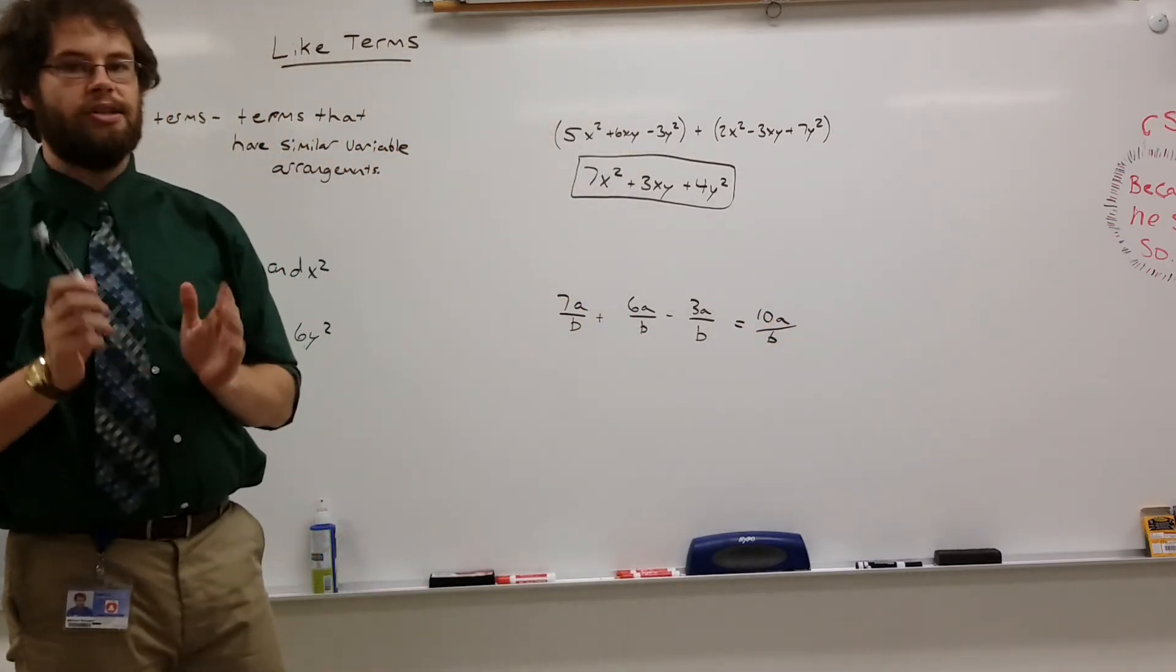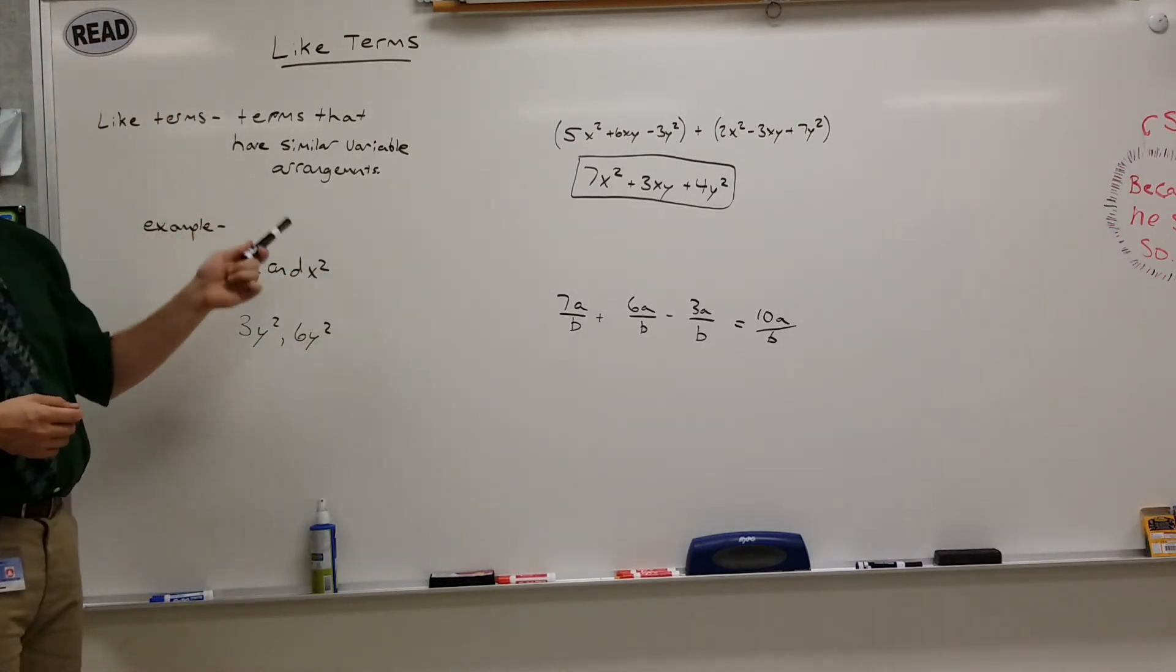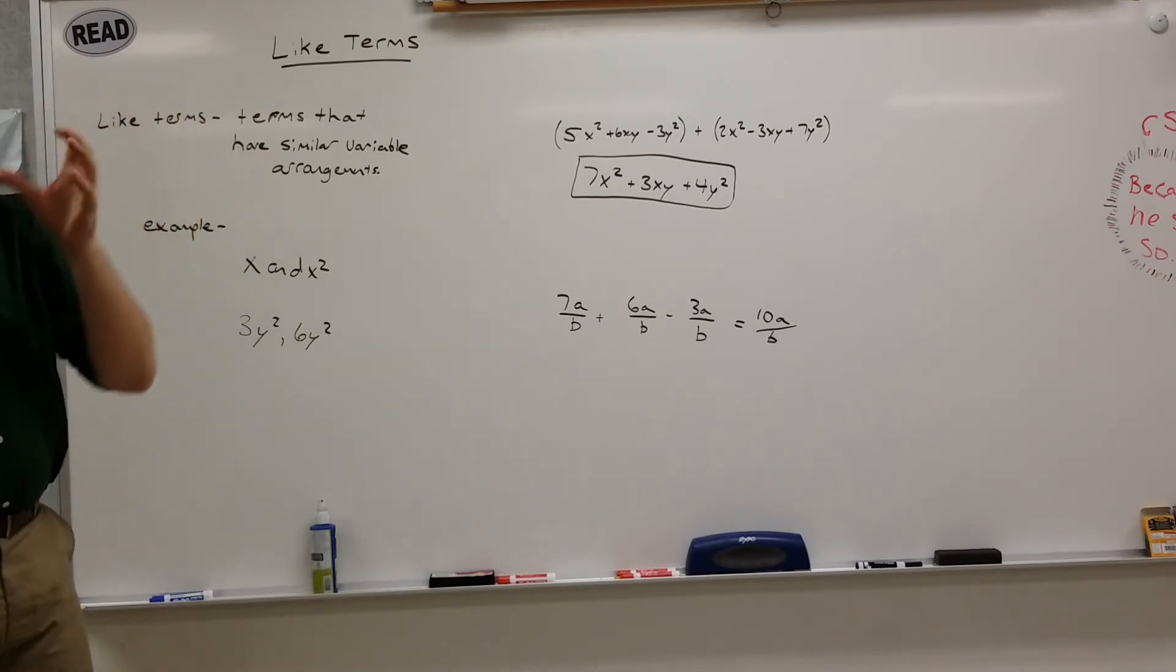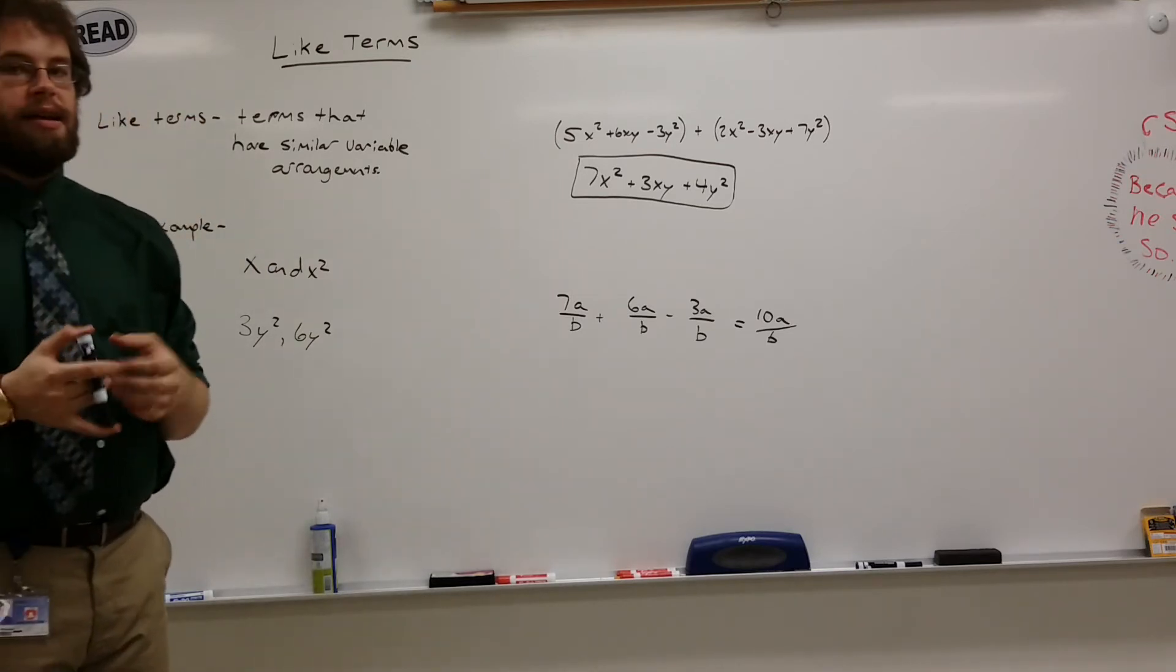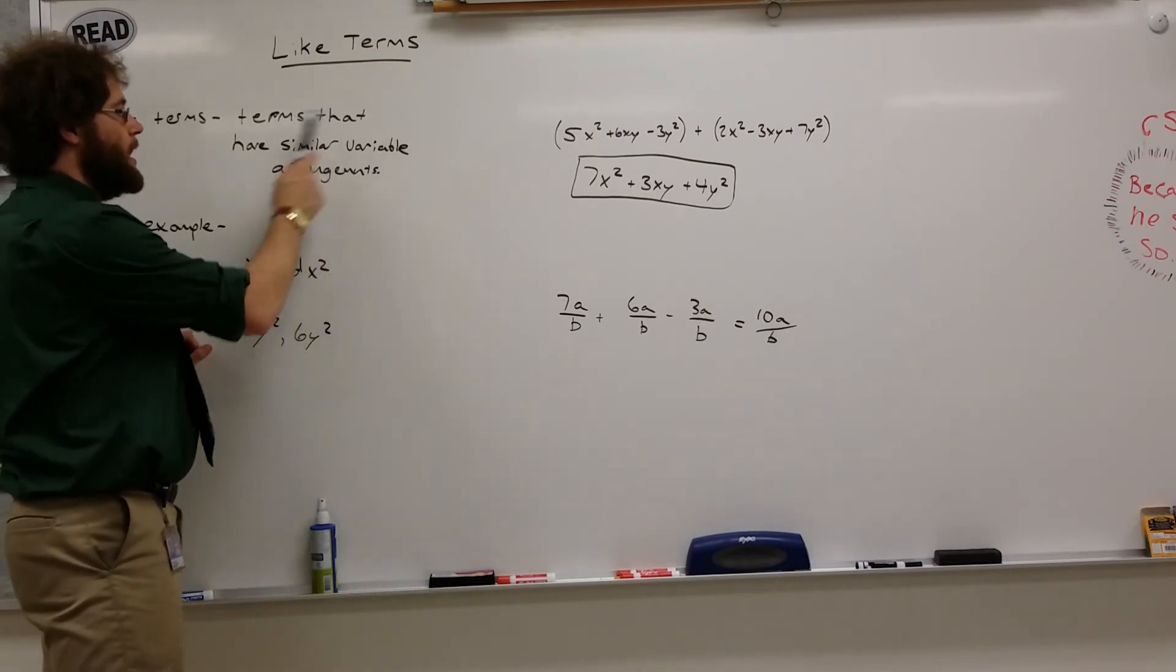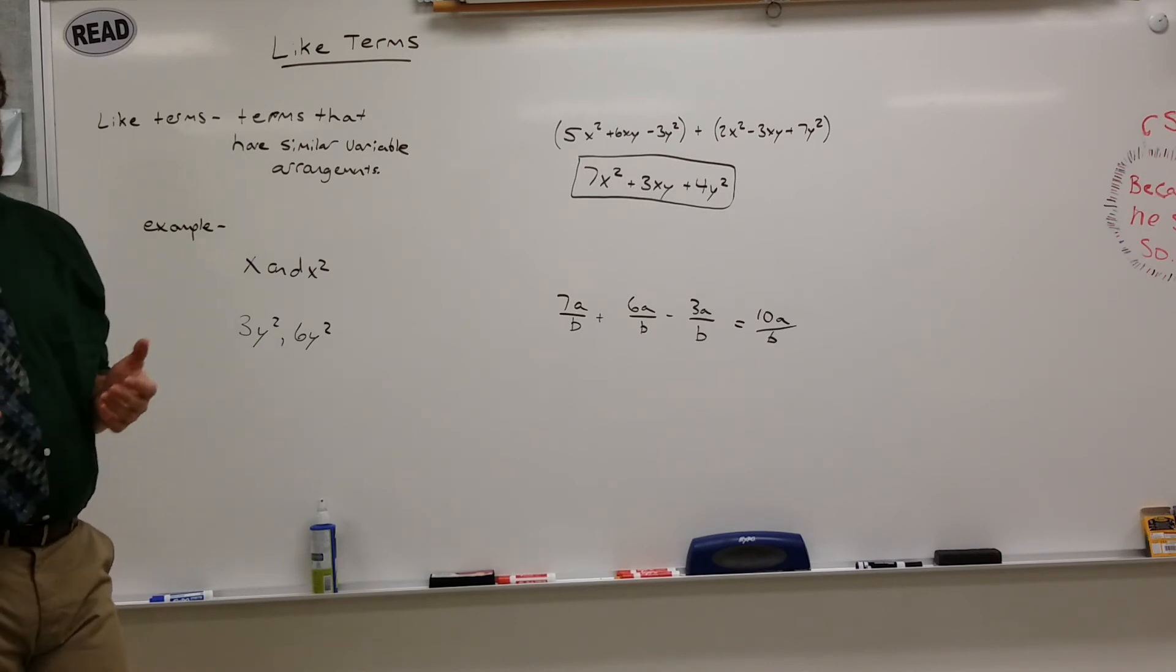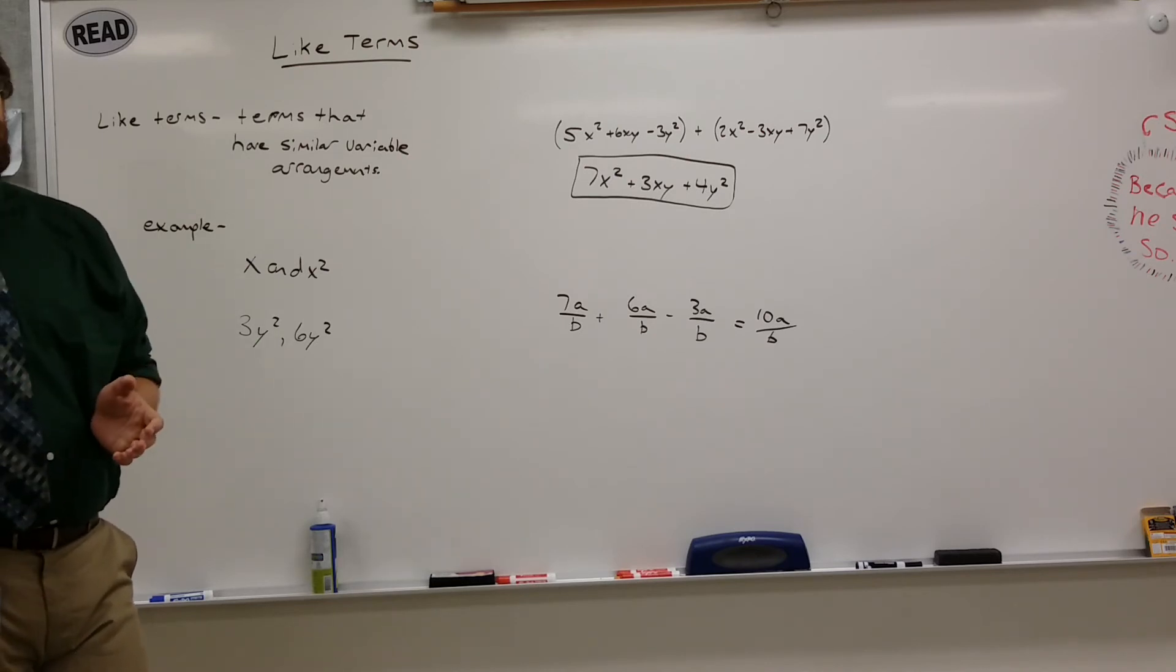So remember, like terms can only be added and subtracted if they have a similar arrangement of variables. As problems get more and more complex, it's going to become more and more important for you to make sure that you can arrange variables correctly, mostly using exponent rules. If you've forgotten how to do that, check out our exponent rules video.